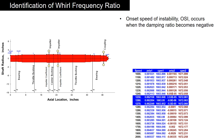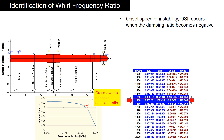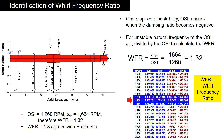After running the finite element simulation, the onset speed of instability can be determined. The onset speed of instability is determined by the point at which the damping ratio becomes negative, which occurs at 1260 rpm. This gives a whirl frequency ratio of 1.32 when divided by the unstable natural frequency.